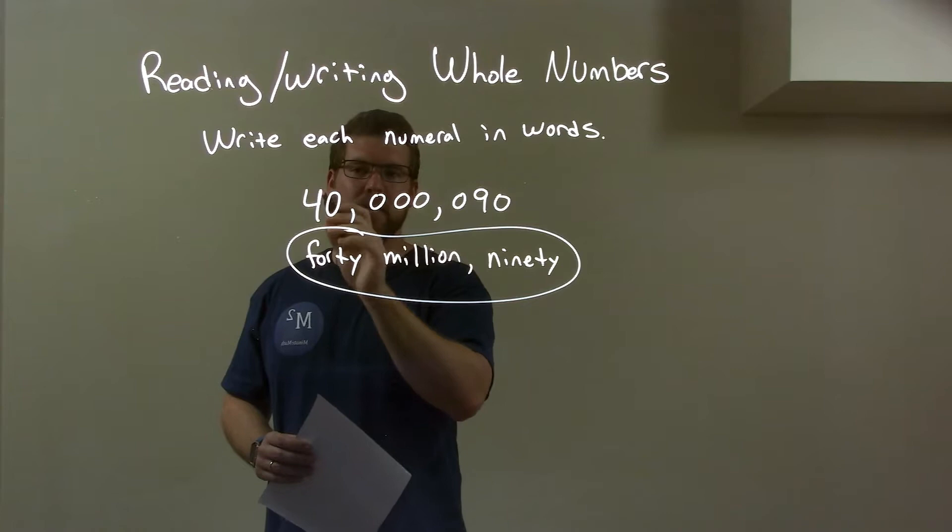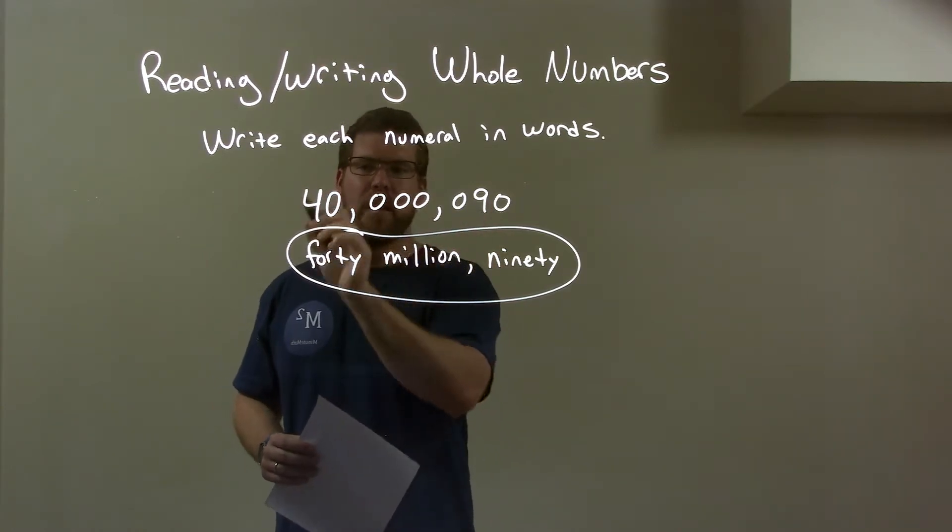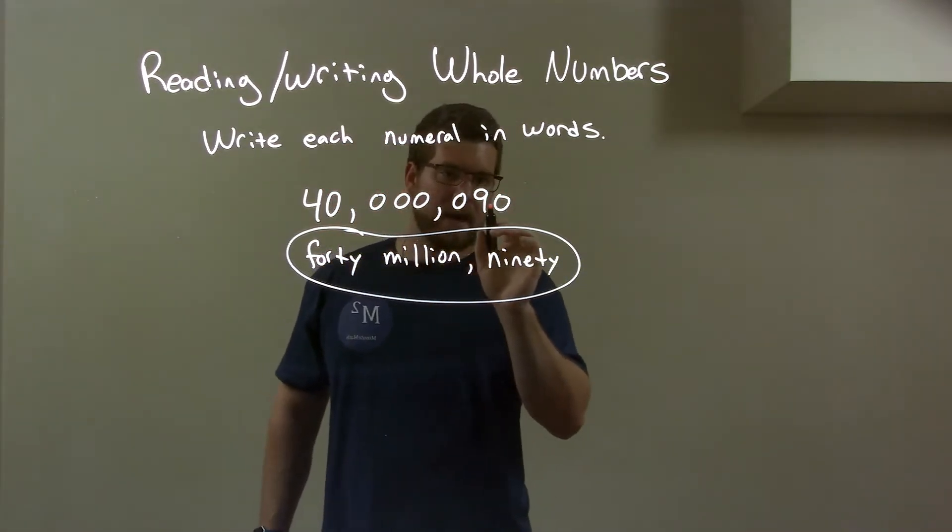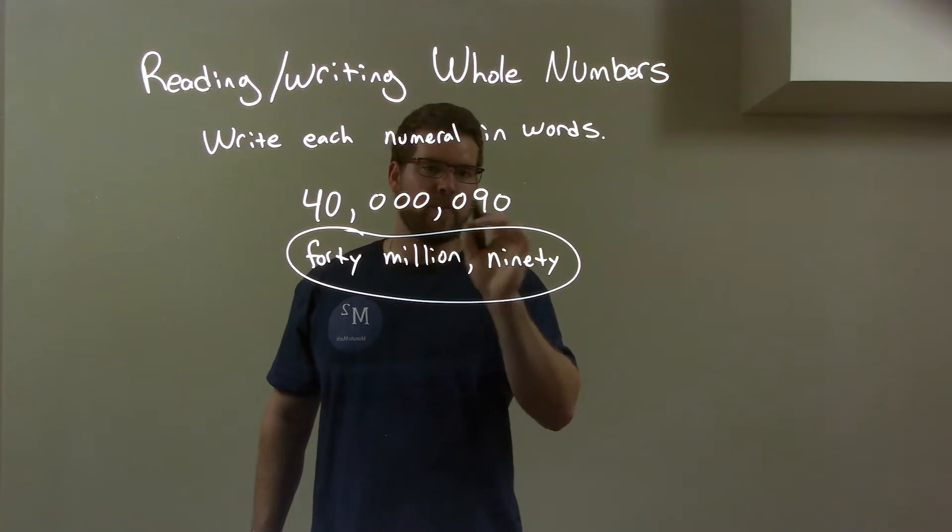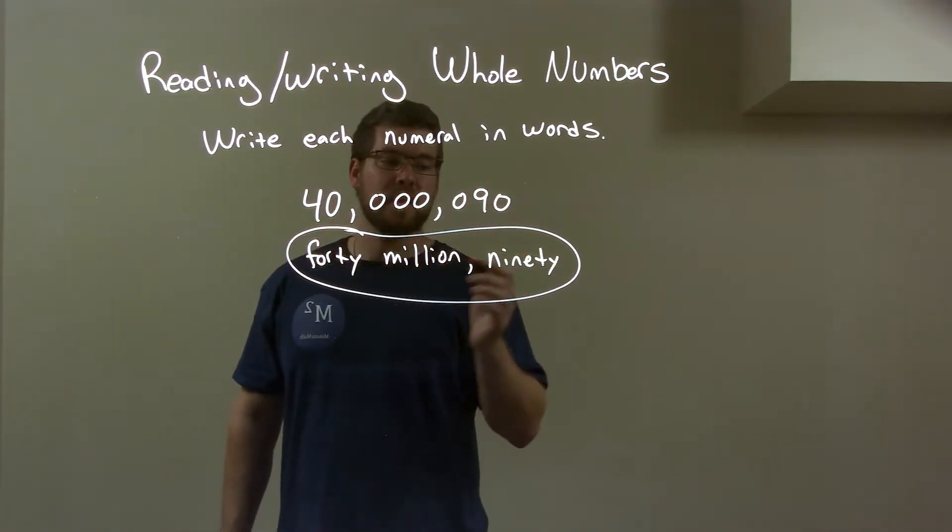Put it right there, and then it's in the millions place, right? Six places afterwards. So 40 million, and it constitutes this. Then we're left with just the 90 afterwards. So the 90 is right there, 40 million, and then 90. So our final answer again is just 40 million 90.